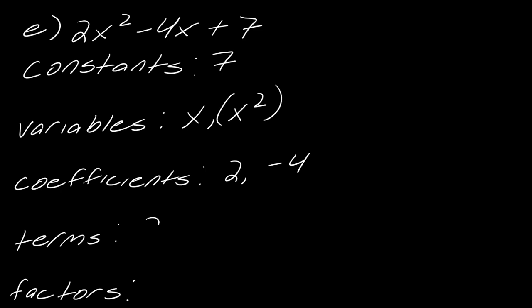The terms, though, you've got 2x squared, negative 4x, and 7. So you should definitely have three terms. If you call this positive 4x, that's okay. And then the factors we have: the pair 2 and x squared, negative 4 and x, and then we'll just leave the 7 alone. So those are kind of our factors.